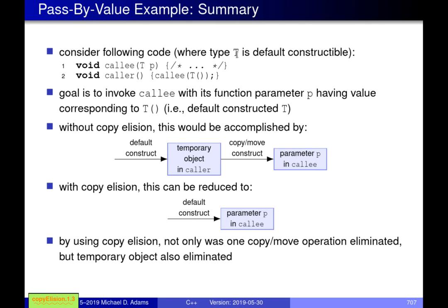Capital T just denotes some default constructible type. It has to be default constructible — otherwise the expression T() is not going to be valid because you can't default construct T. But otherwise it's perfectly general; it doesn't really matter what T is. What we're doing is passing arguments to functions. The caller is going to invoke the function 'callee' and pass it a default constructed T.